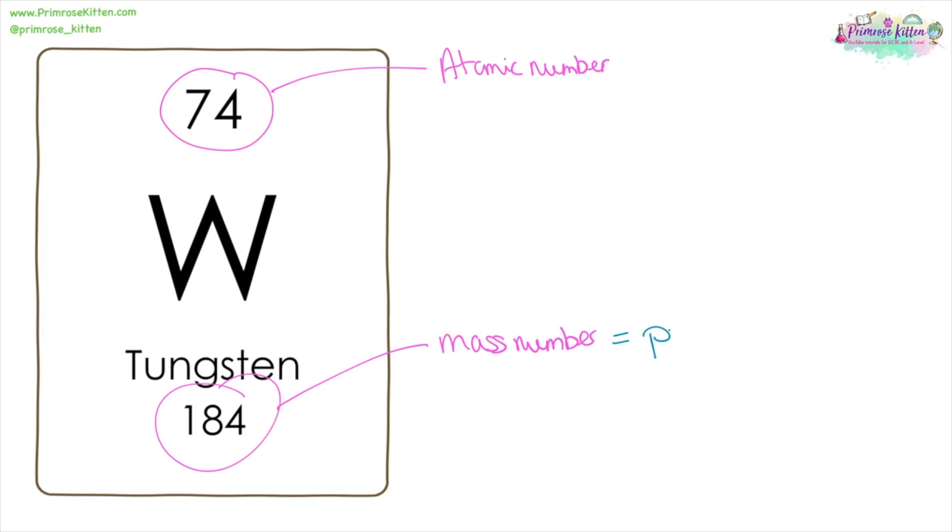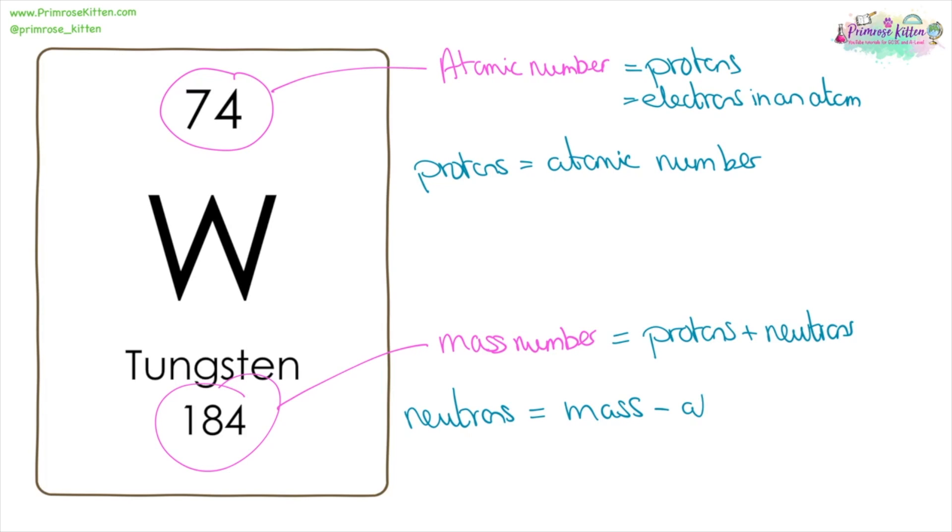The mass number is equal to the number of protons plus the number of neutrons. The atomic number is equal to the number of protons and also equal to the number of electrons in an atom. So if you want to find the number of protons, that is equal to the atomic number. Whereas if you want to find the number of neutrons, that is equal to the mass number minus the atomic number.